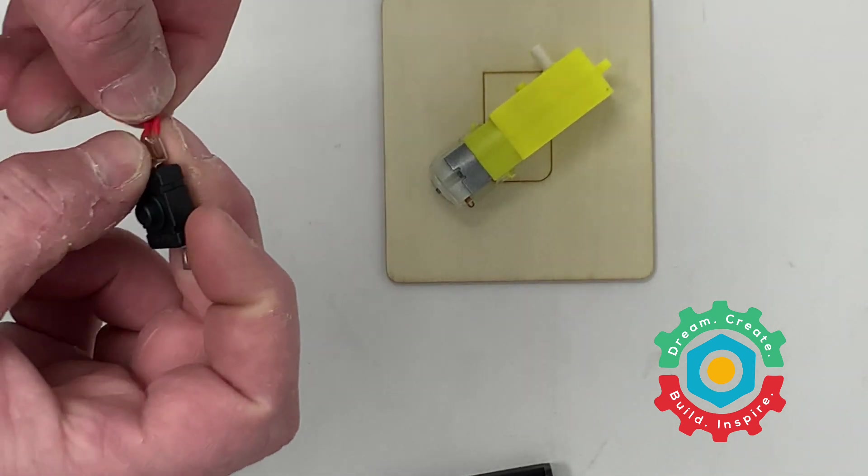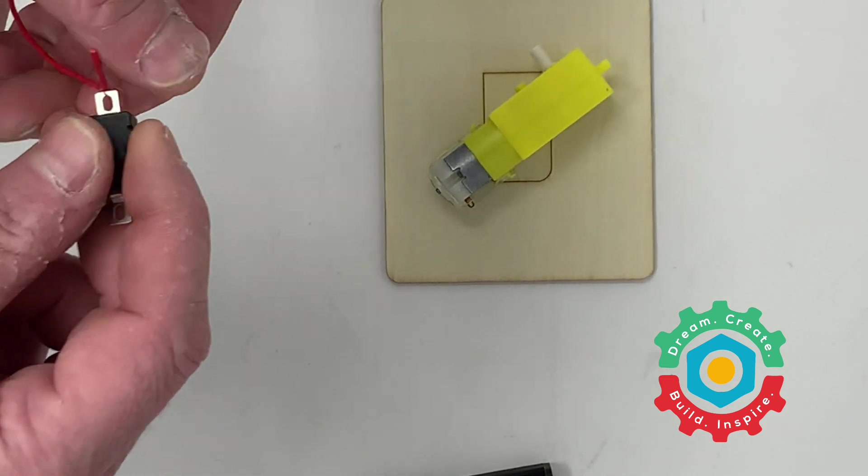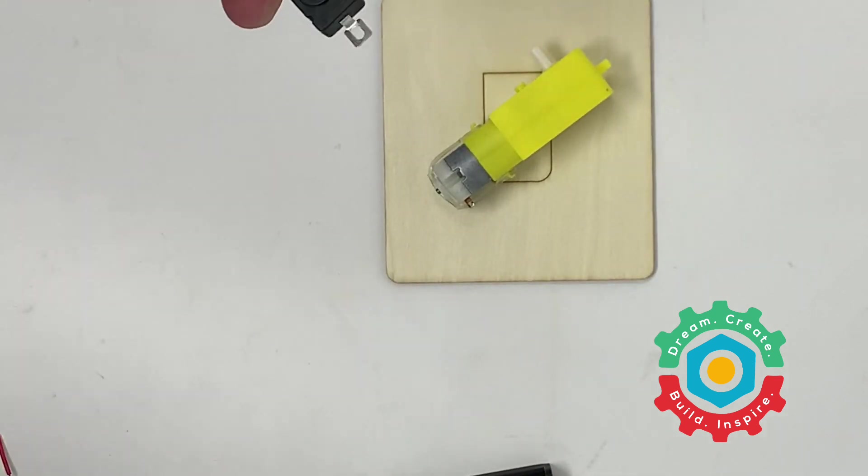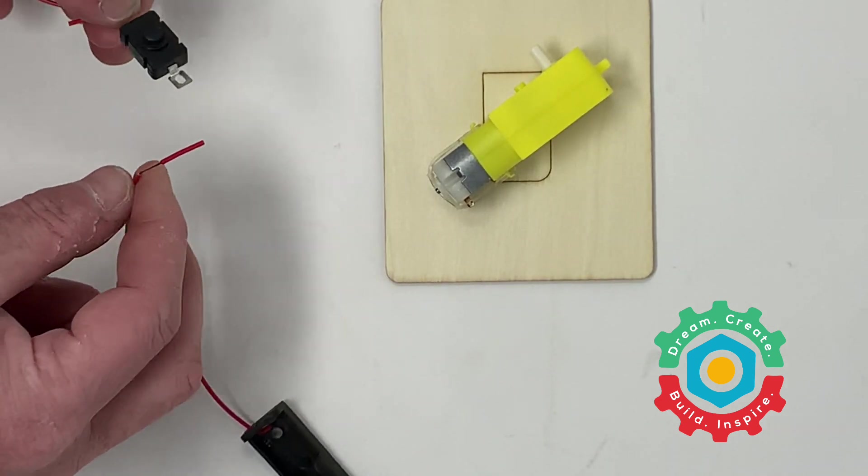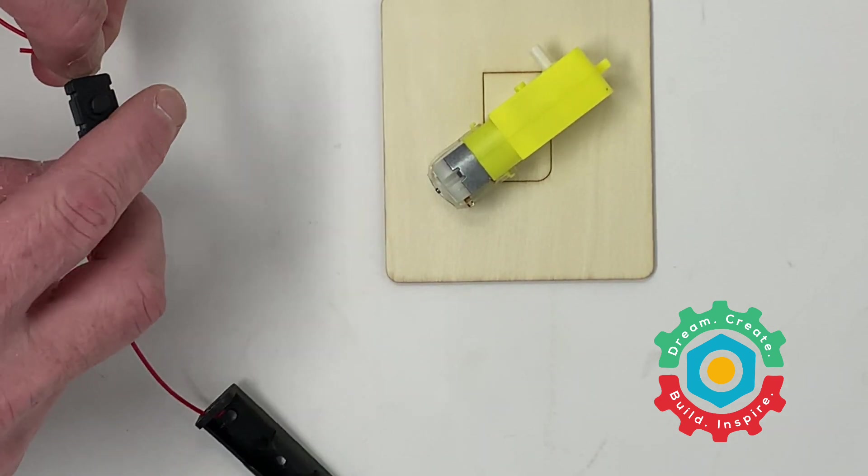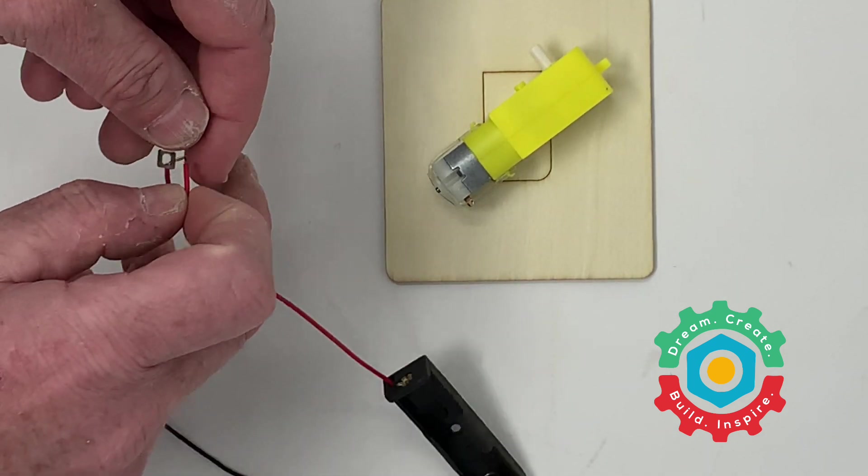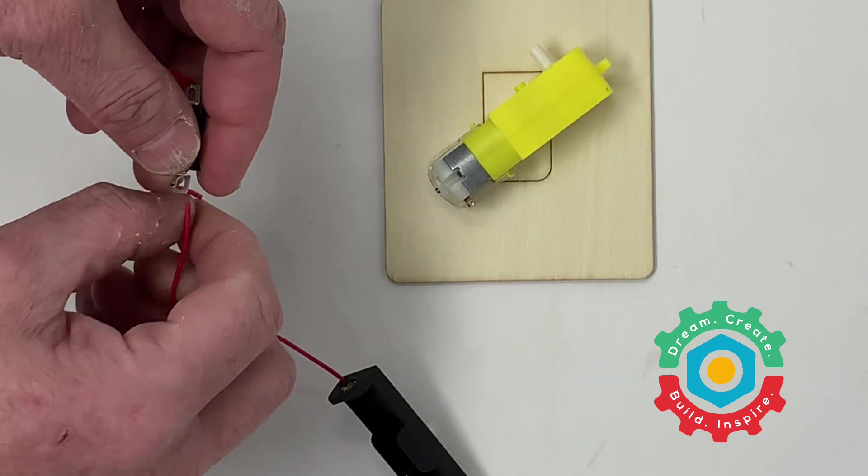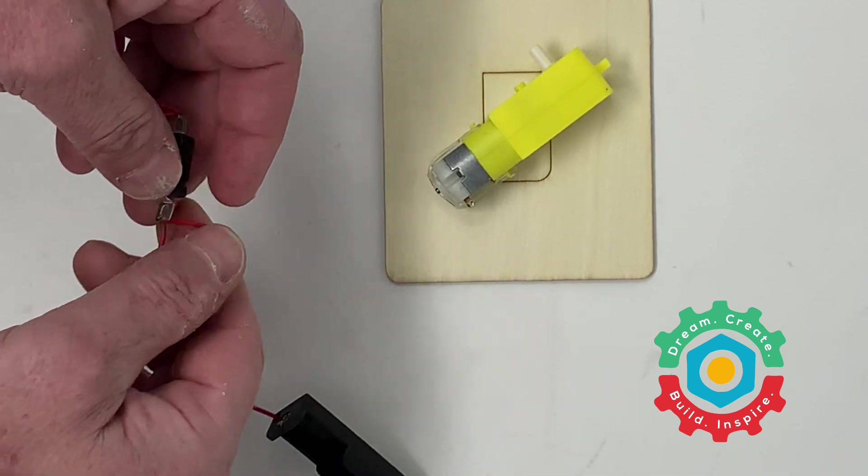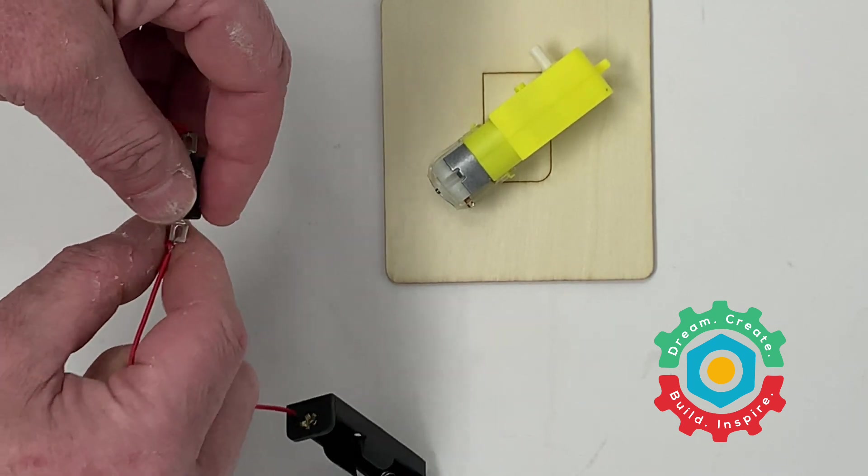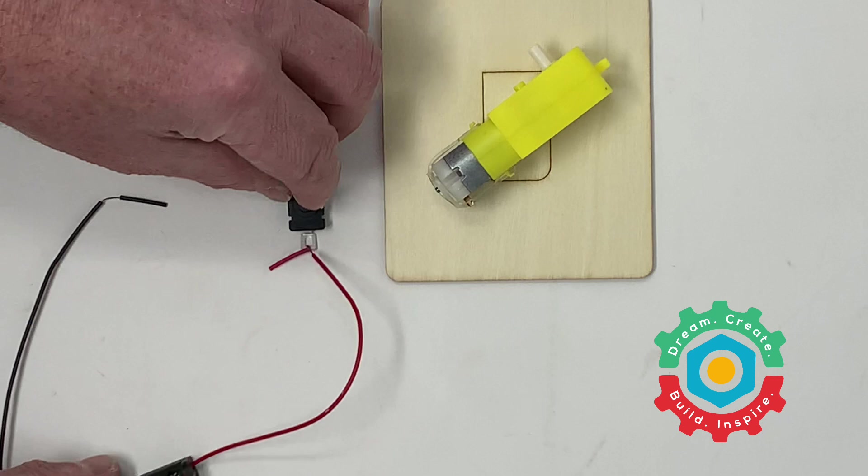Then we're going to take our battery pack and the red wire and slip that through just like this. That'll be the way we're going to work that. This is creating our pathway for the electrons to travel and make everything happen. It should look like that at this point now.